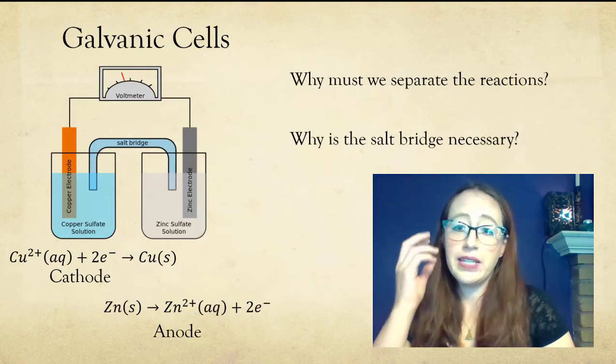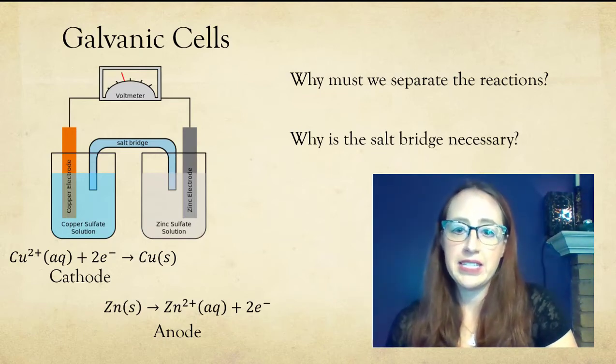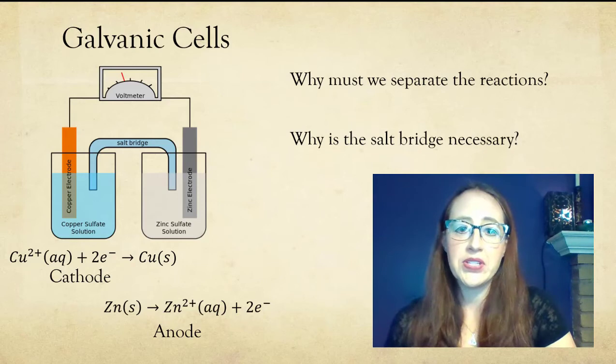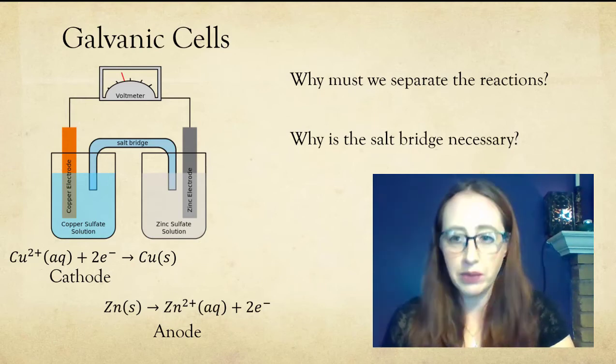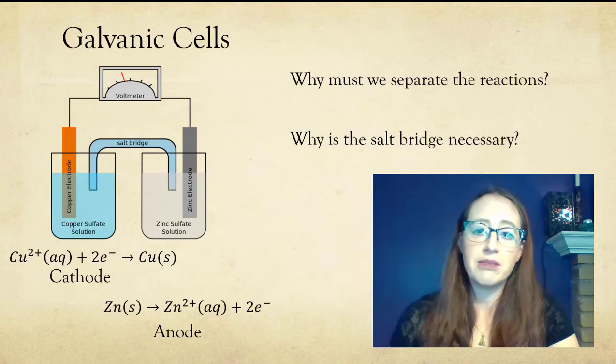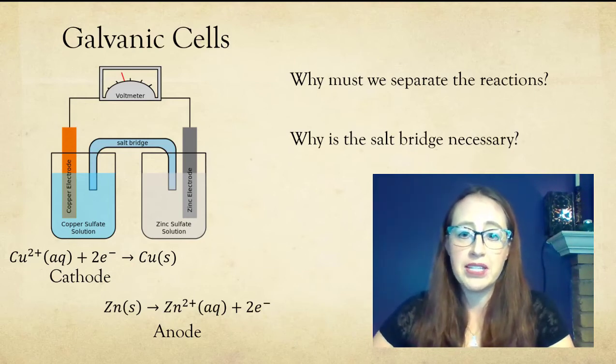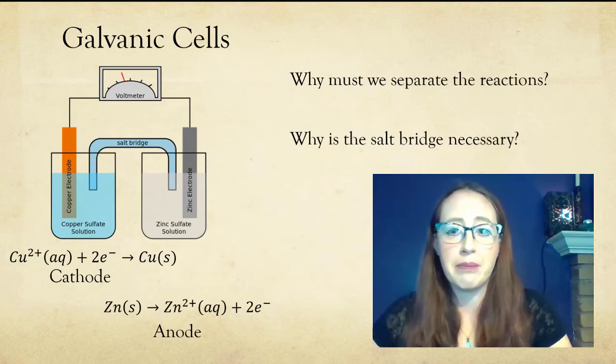In galvanic cells, we generally separate the reactions in this manner where they're in different beakers or different containers or different segments of the battery, etc. So that we can use the electrons rather than having them go directly to the other species without doing any work for us. That being said, there are many kinds of batteries and ways of accomplishing this than just putting them in separate beakers.